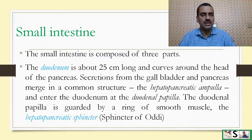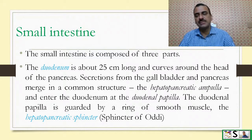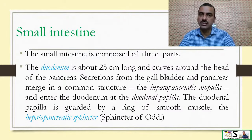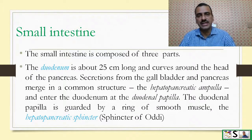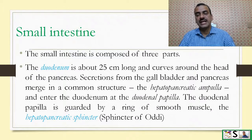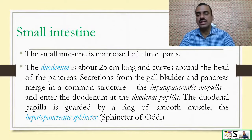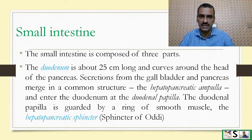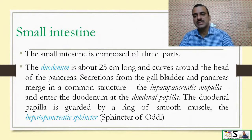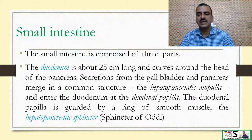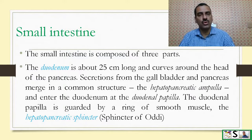Secretions from the gallbladder and pancreas merge in a common structure called the hepatopancreatic ampulla and enter into the duodenum at the duodenal papilla. The duodenal papilla is guarded by a ring of smooth muscles known as the hepatopancreatic sphincter or sphincter of Oddi.